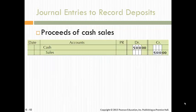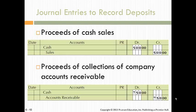Journal entries to record deposits: when you have a sale, you have a debit to cash and a credit to sales. The proceeds from collections of accounts receivable are also a debit to cash and a credit to AR. So these two types of cash transactions can occur.